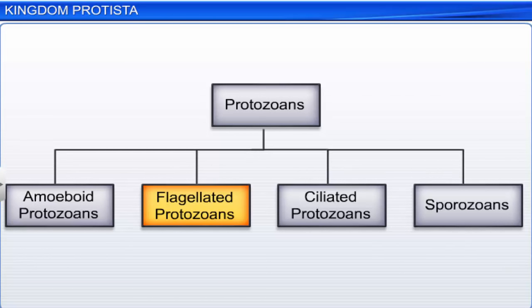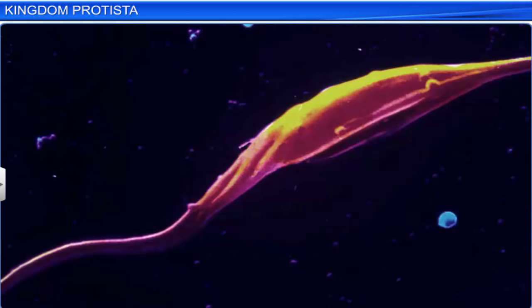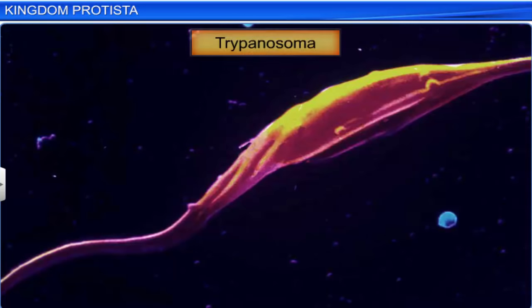Flagellated protozoans, as the name suggests, have flagella. They can be either free-living or parasitic. Some parasites like Trypanosoma can also cause diseases.